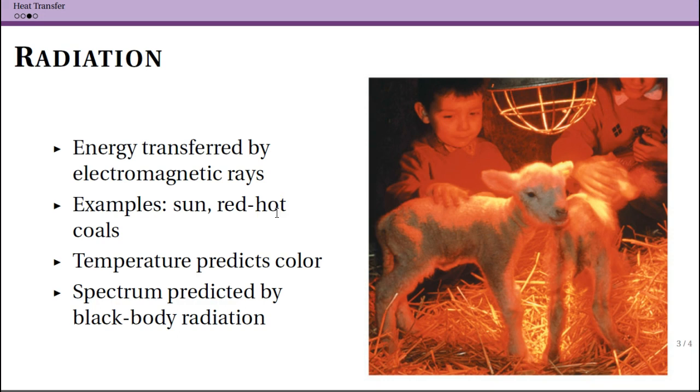You know that certain things glow different colors based on their temperature. And that, so you could use temperature to predict color, or color to predict temperature. This spectrum is actually described by a theory called black body radiation, and this is actually an early part of quantum theory.